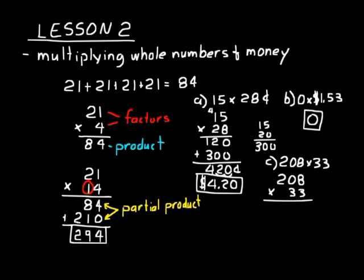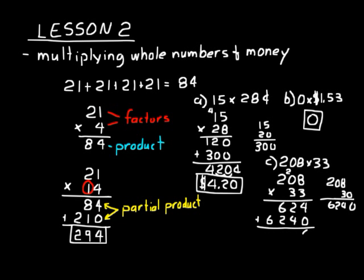So two-oh-eight times three: eight times three is twenty-four, carry a two. Zero times three is zero, so we bring the two down. Two times three is six. That gives us six hundred twenty-four. Then we do two-oh-eight times thirty. We can leave the trailing zero and do two-oh-eight times three again, giving us six hundred twenty-four, so two-oh-eight times thirty is six thousand two hundred forty. Adding those two partial products together: six thousand eight hundred sixty-four is our answer.